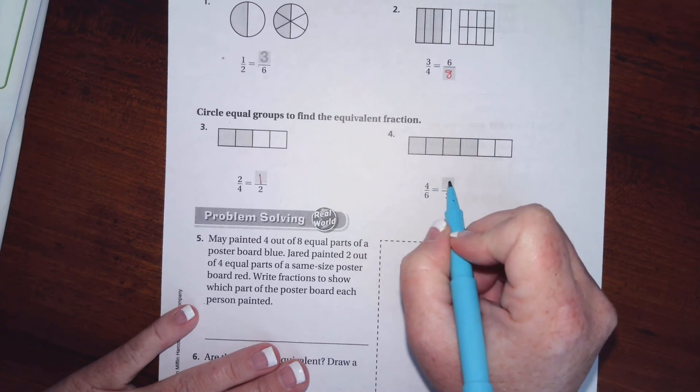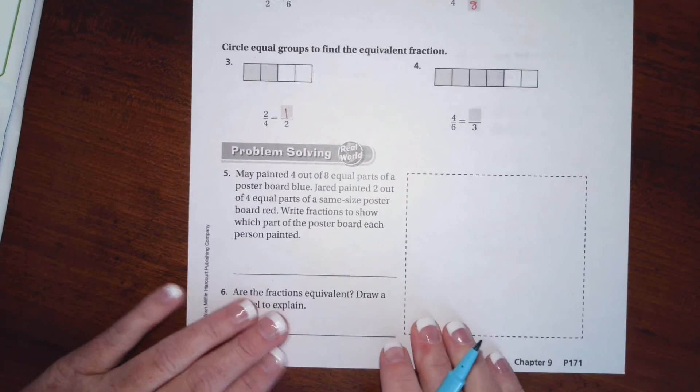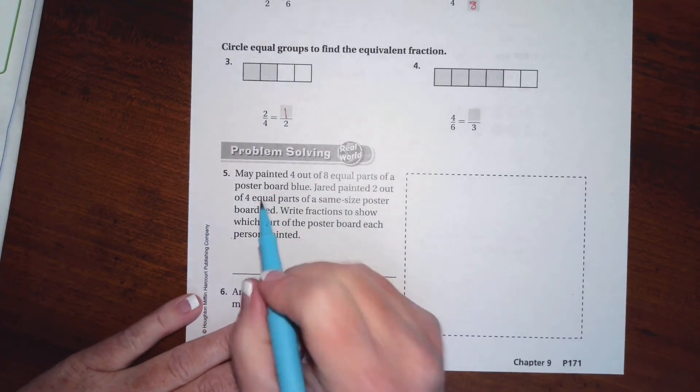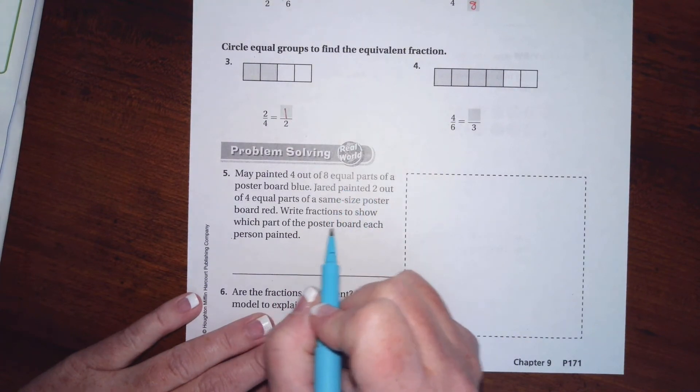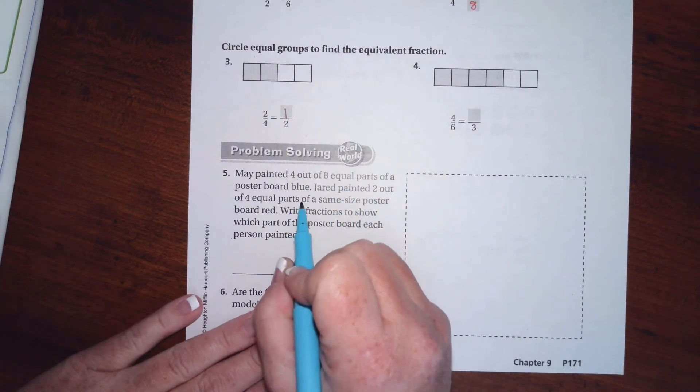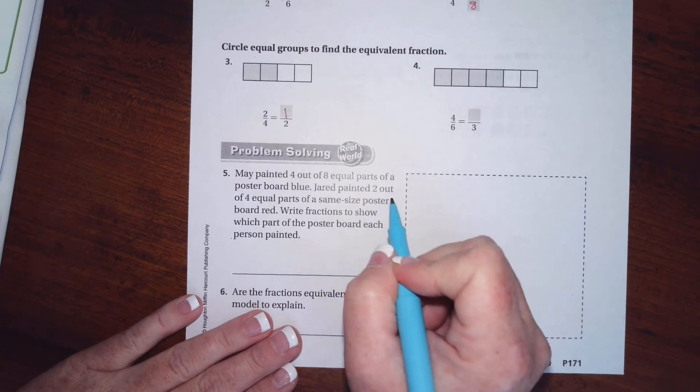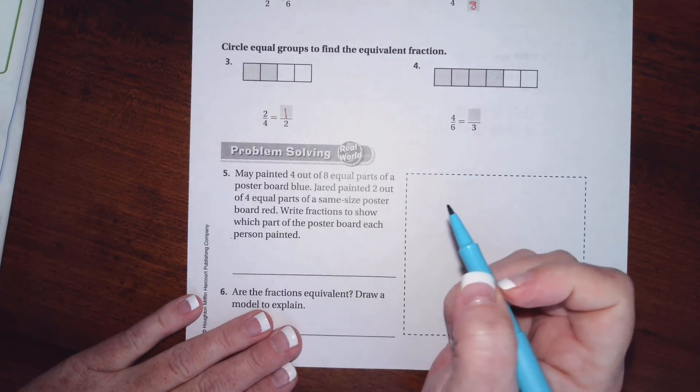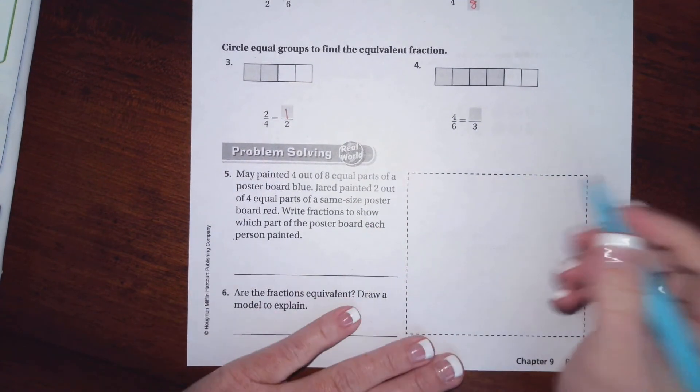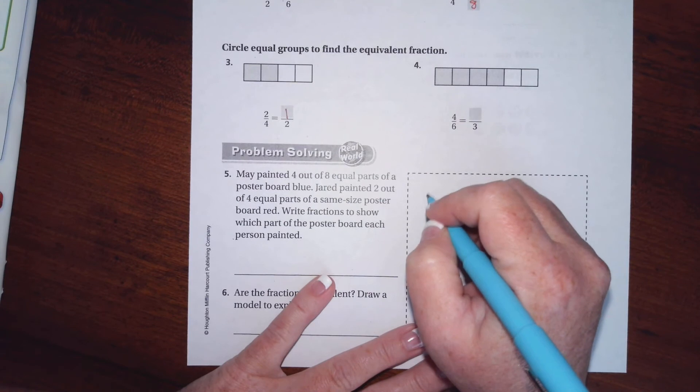We're going to go ahead down here and it says May painted four out of eight equal parts of a poster board blue. Jared painted two out of four equal parts the same size poster board red. Write the fractions to show each part.